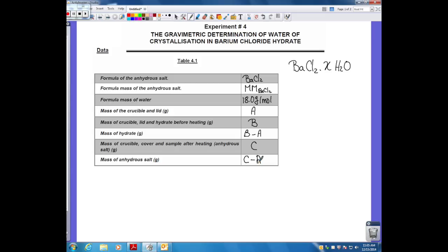The mass of BaCl2 equals C minus A. You can calculate the number of moles of BaCl2, which equals the mass of BaCl2 divided by the molar mass of BaCl2. You can calculate the mass of water, which equals B minus C - the mass of crucible, lid, and hydrate minus the mass of crucible, lid, and anhydrous. Once you have the mass of water, you can calculate the number of moles of water, which equals mass of water divided by the molar mass of water, which is 18.